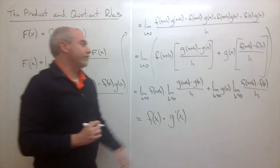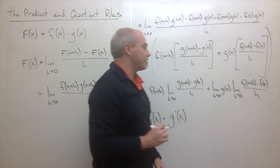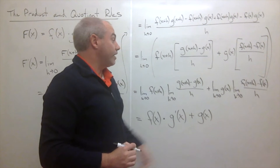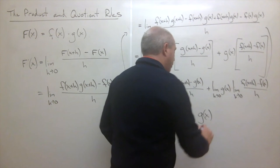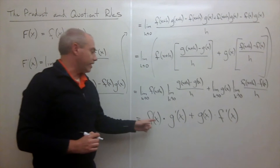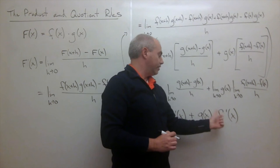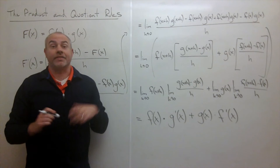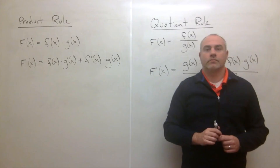The limit as H goes to zero of g of X — there are no H's in g of X, so it's just a constant with respect to H, giving us g of X. And the limit as H goes to zero of f of X plus H minus f of X over H is f prime of X. So capital F prime of X equals f of X times g prime of X plus g of X times f prime of X — the first times the derivative of the second, plus the second times the derivative of the first. That's how we get the product rule.